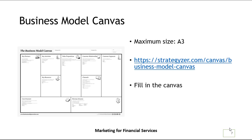To accompany the video, I'm going to ask you to submit a business model canvas for your product portfolio. There are many business model canvases out there — just fill one out. The maximum size you can use is a PDF file of up to A3, because there are limits to how much data we want to read. A3 is your cap size for this, and it's going to be a digital file submission.